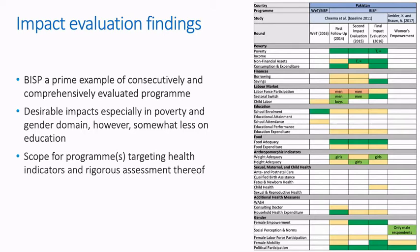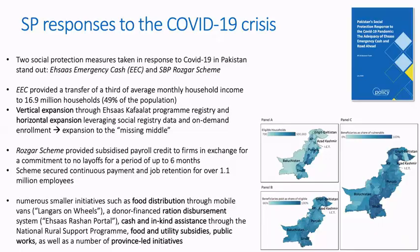The ASAS strategy calls for more quantitative quasi-experimental or experimental evaluations of initiatives — a very desirable future development if conducted in a similar fashion to the BISP evaluations. It would particularly be interesting to see more programs in Pakistan evaluated according to their effect in the health domain.